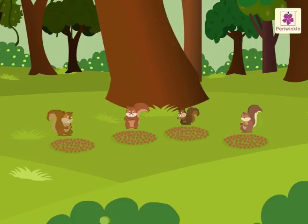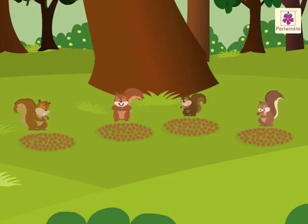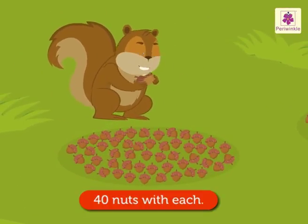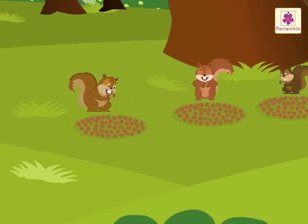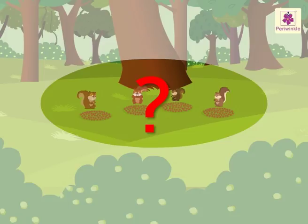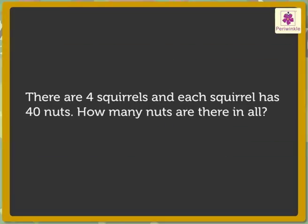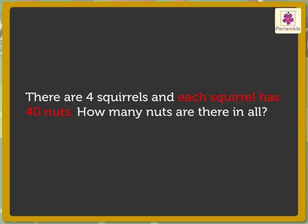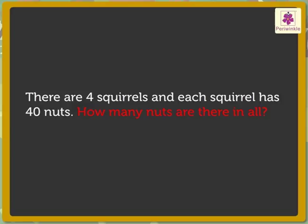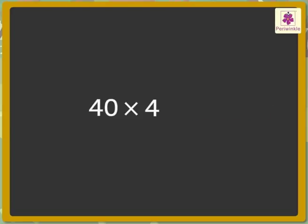Can you see those 4 tiny squirrels? They are having their favourite food, nuts. Each squirrel has 40 nuts. How many nuts are there in all? First, we read the story. What information does it give? 4 squirrels and 40 nuts with each squirrel. Now, let us see what we have to find out. How many nuts are there in all? We have to multiply 40 and 4 to find the total number of nuts.